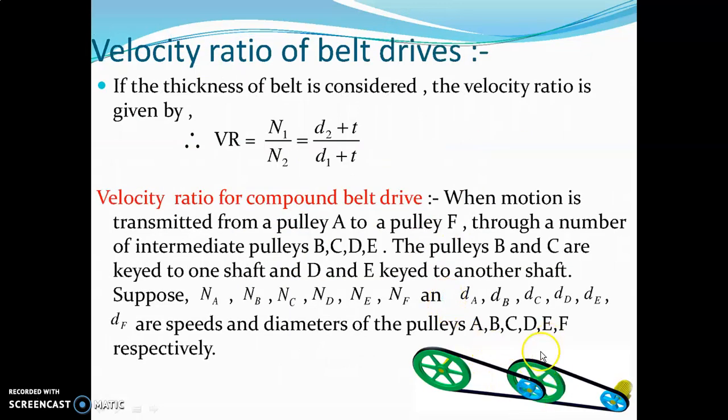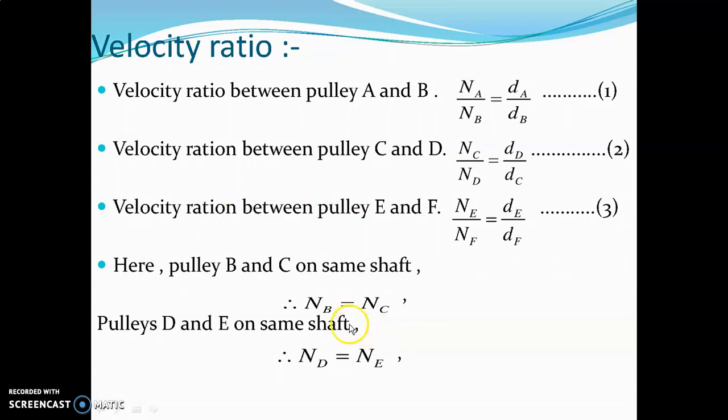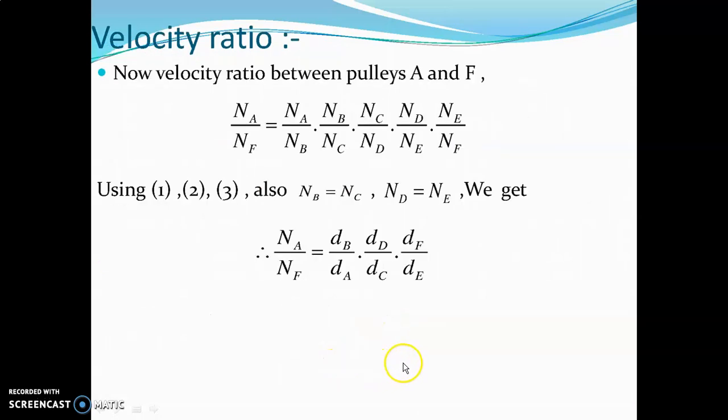Similarly, n_b upon n_c, n_c upon n_d, n_d upon n_e, and n_e upon n_f. Since n_b and n_c are the same when mounted on the same shaft, and n_d and n_e are the same, to find the velocity ratio nₐ upon n_f, we multiply: d_b upon d_a times d_d upon d_c times d_f upon d_e. This gives us the velocity ratio for a compound belt drive.